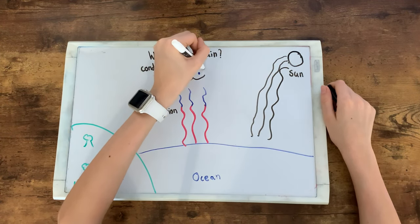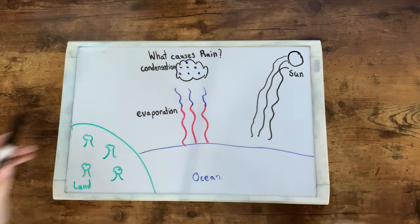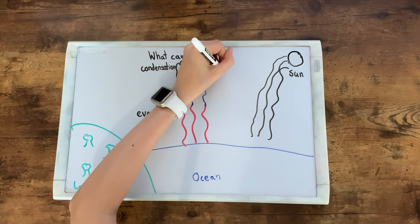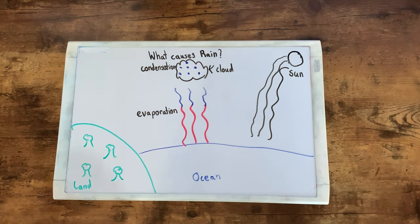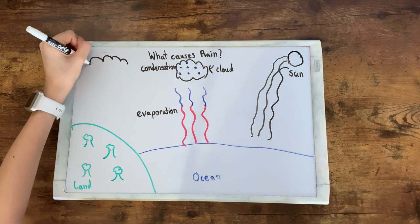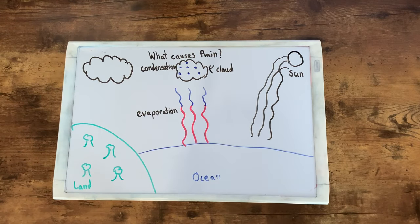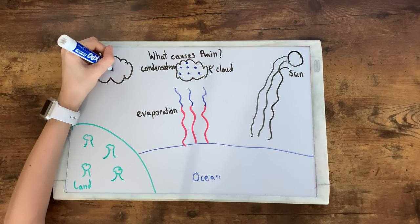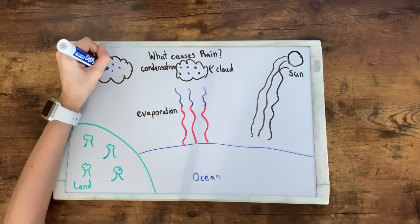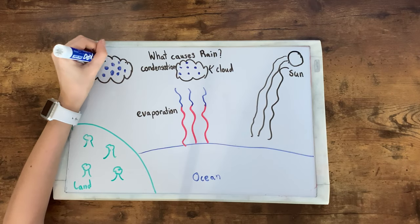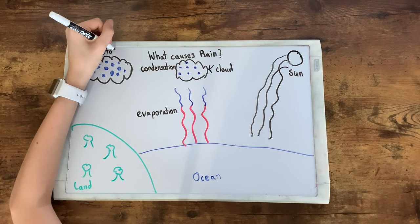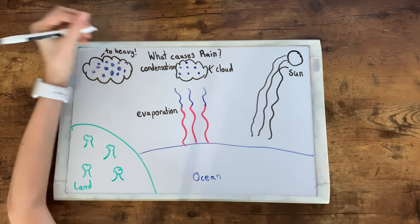Clouds are made of tiny water droplets, so when condensation occurs in the sky, clouds form and grow. When the water droplets bump into one another, they come together to make bigger water droplets. When they grow too big and too heavy, they fall as rain.